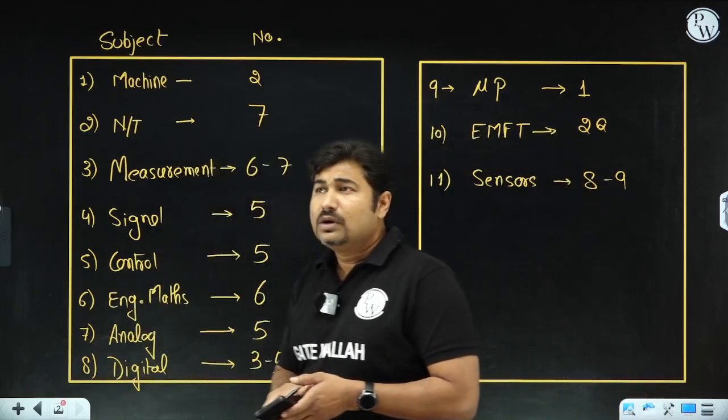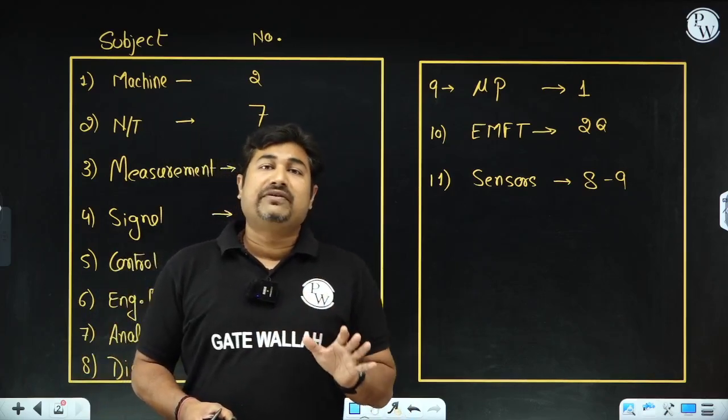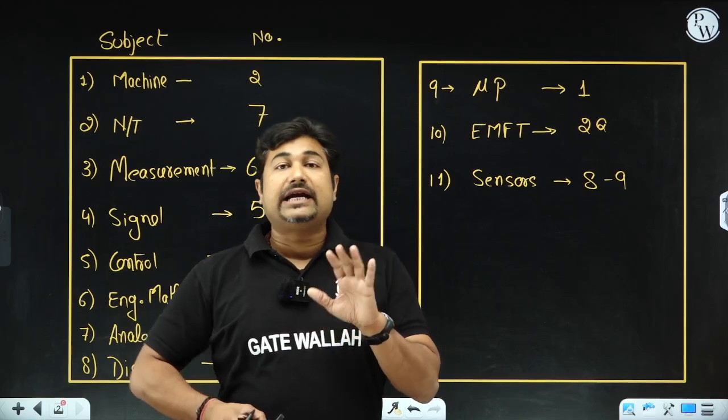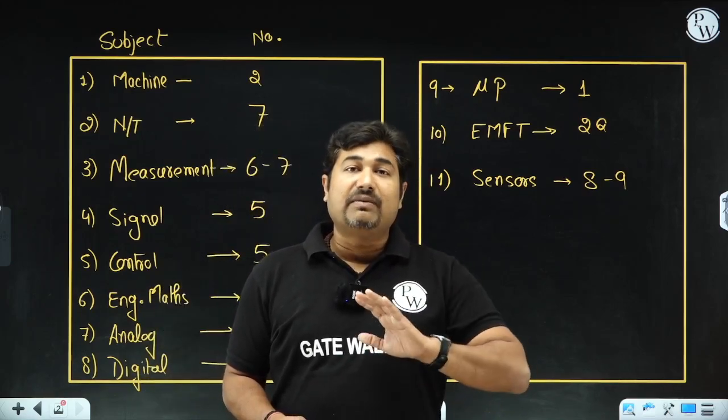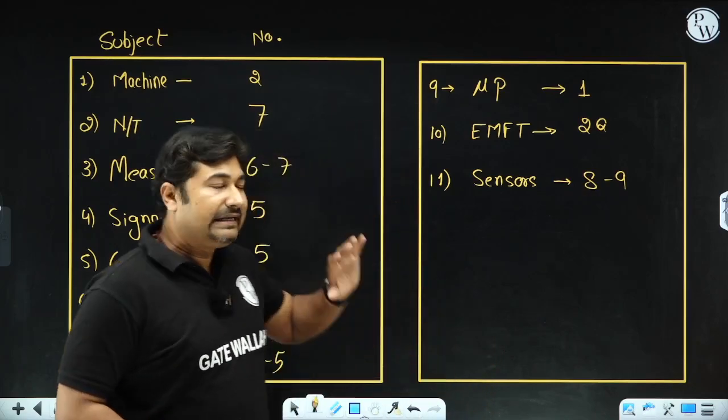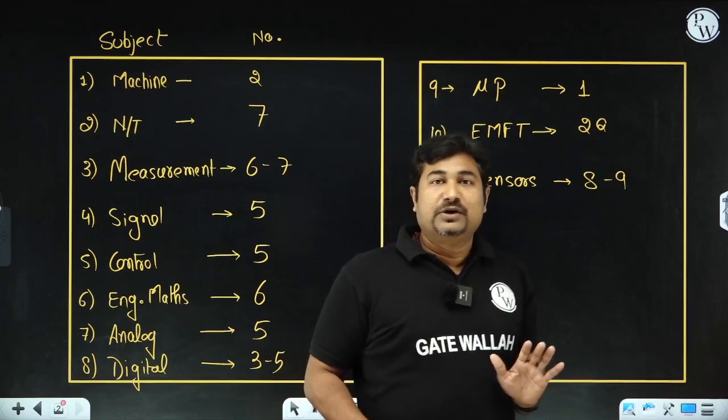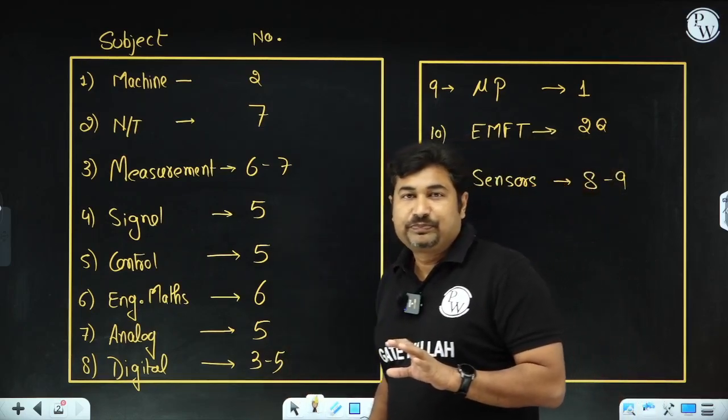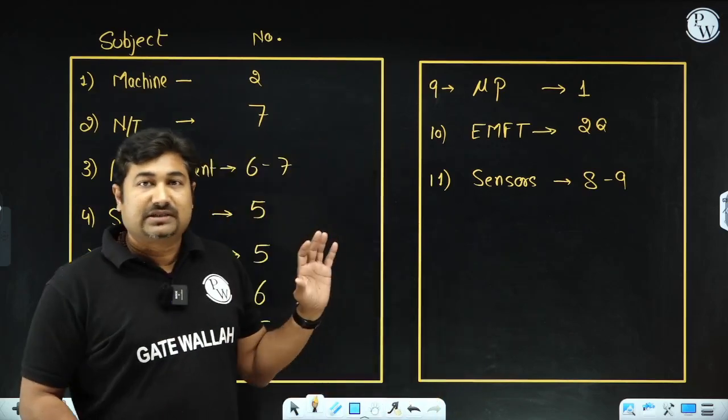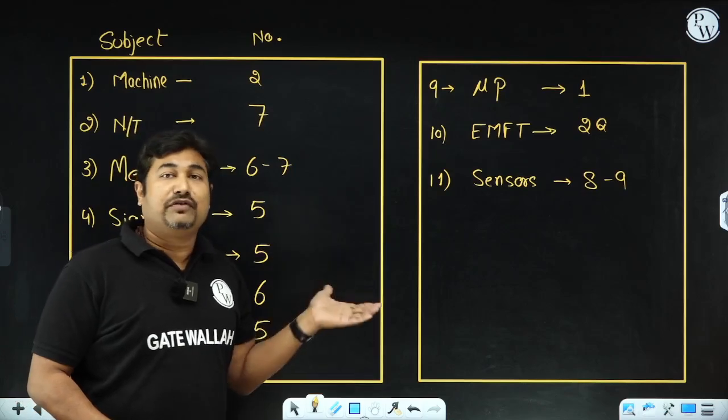I can say for 2025, IIT created a great paper. Why am I saying this is a great paper? Because it is a balanced paper. They check your entire technical knowledge by distributing the number of questions throughout the subjects. If you observe all the subjects, as per the size of the subject, the number of questions are being distributed very uniformly.